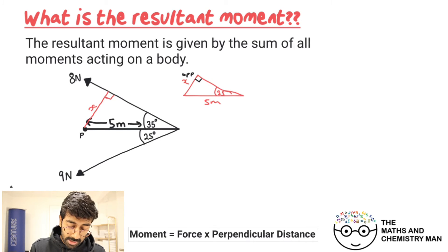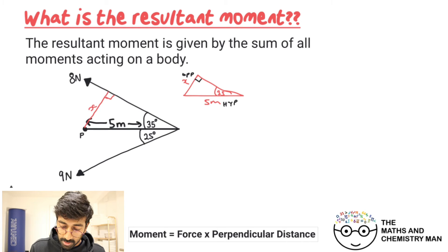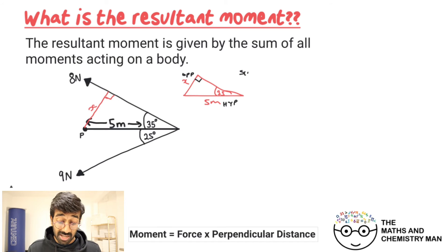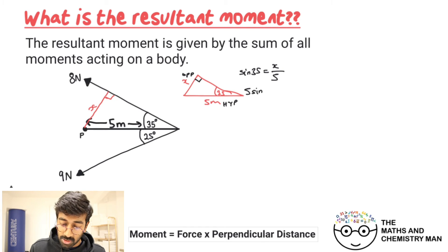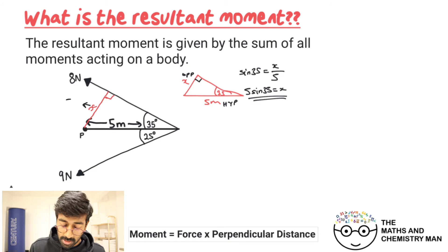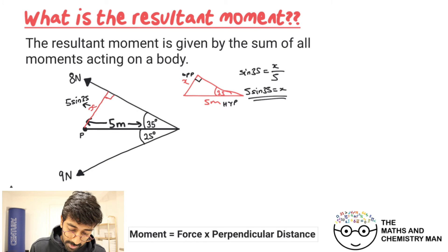Labeling the triangle for SOHCAHTOA: x is the opposite side and five meters is the hypotenuse. So we use the sine ratio: sine 35 equals opposite over hypotenuse, giving x equals 5 multiplied by sine 35, i.e. 5 sine 35. We fill that in on our diagram.